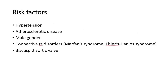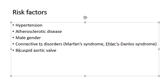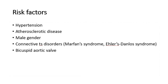The risk factors of aortic dissection are hypertension, atherosclerotic disease, male gender, connective tissue disorders like Marfan's syndrome or Ehlers-Danlos syndrome, and bicuspid aortic valve. As a general rule, younger cases often have associated connective tissue disorders, whilst older patients are more likely to have underlying hypertension or atherosclerosis.